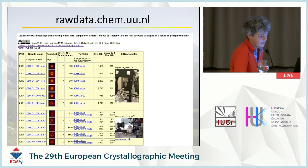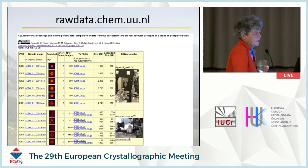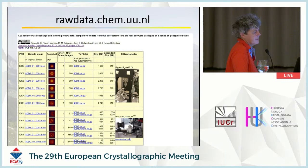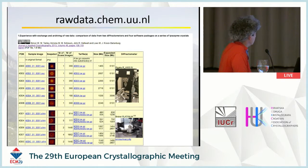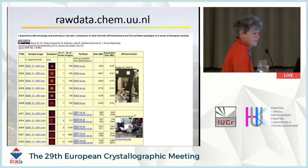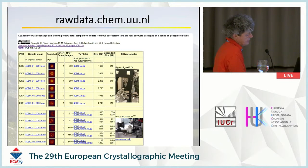We decided to put our data on an archive. Manchester University was originally going to take care of that, but it took longer than we wanted, so we set up our own website in Utrecht — rawdata.unl. The site has tar files for downloading all the data, a link to a single image so you can test if your software can read the format, a PNG file showing how we interpreted the image, and on the right side, a photograph of the experimental setup.